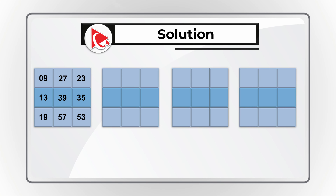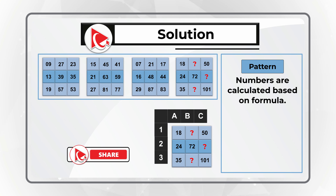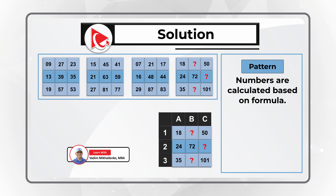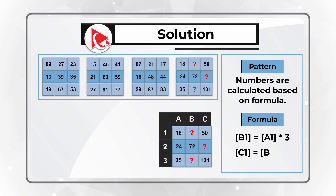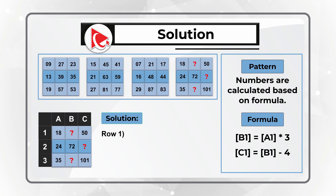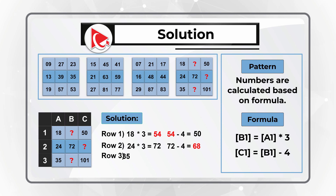The pattern is that numbers are calculated based on a formula. Breaking the matrix into columns A, B, and C with rows 1, 2, and 3: B1 is calculated as A1 multiplied by 3, and C1 is calculated as B1 minus 4. For row 1: 18 multiplied by 3 equals 54, and 54 minus 4 equals 50. For row 2: 24 multiplied by 3 equals 72, and 72 minus 4 equals 68. For row 3: 35 multiplied by 3 equals 105, and 105 minus 4 equals 101.